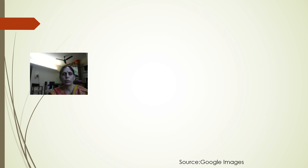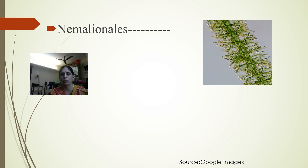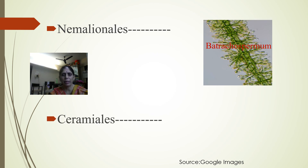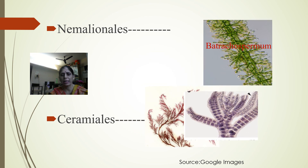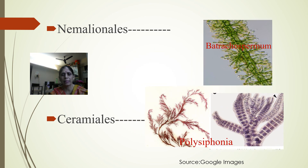In red algae, we will be studying Nemalionales, and within Nemalionales we will study the type Batrachospermum. The second order we will be studying is Ceramiales, in which we will study only one type: Polysiphonia.